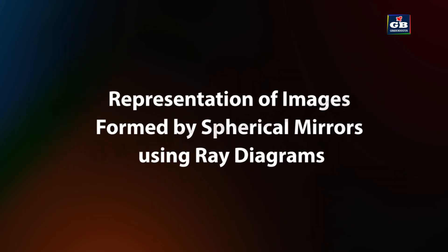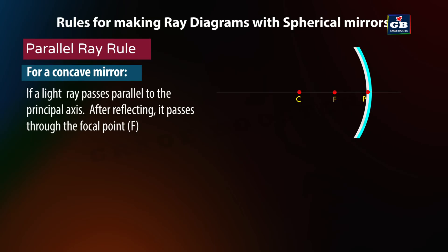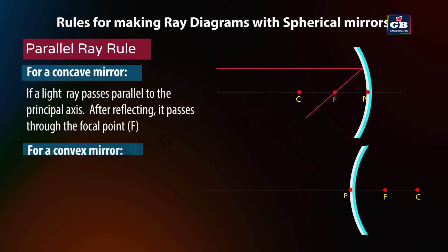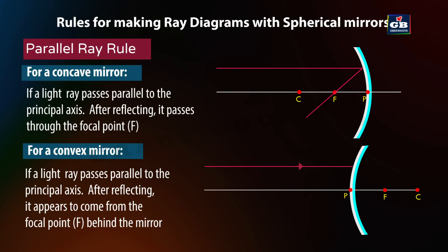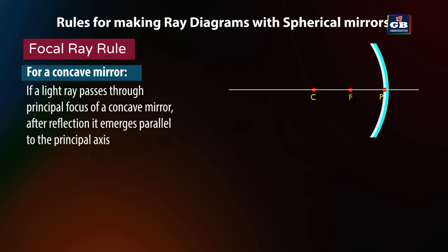Representation of images formed by spherical mirrors using ray diagrams. Rules for making ray diagrams — parallel ray rule: for a concave mirror, if a light ray passes parallel to the principal axis, after reflecting it passes through the focal point F. For a convex mirror, it appears to come from the focal point F behind the mirror. Focal ray rule: for a concave mirror, if a light ray passes through the principal focus, after reflection it emerges parallel to the principal axis.